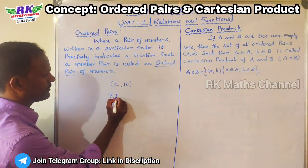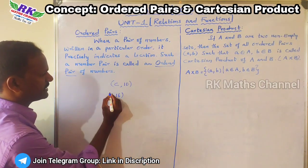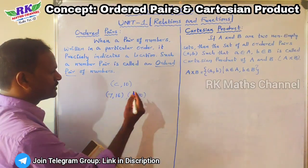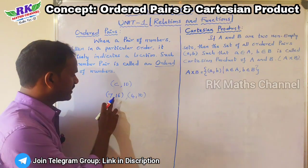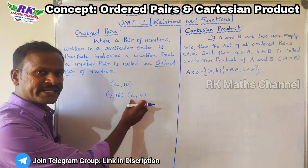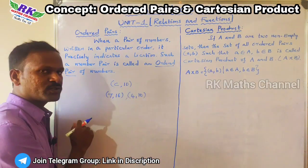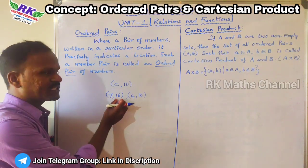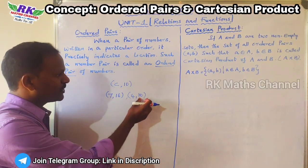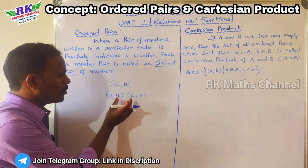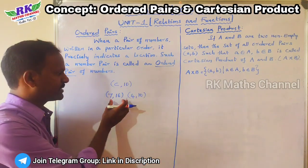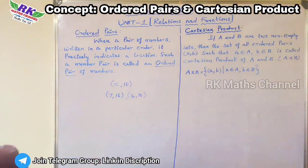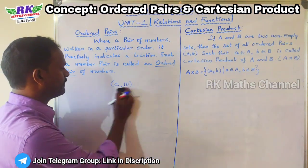For example, 7,16 and 4,10 are ordered pairs. 7,16 means the 7th row, 16th seat. 4,10 means the 4th row, 10th seat. So one location indicates one ordered pair.